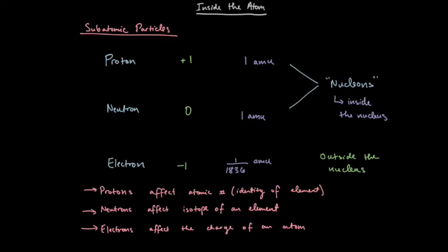And each of these particles play an effect with the identity of the atom. Protons affect the atomic number, which gives the identity of the element. Neutrons affect the isotope, and so they change the different forms of that element. Electrons, on the other hand, affect the charge of an atom. And we'll get into each of these in a moment.